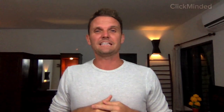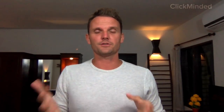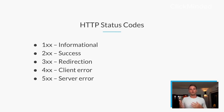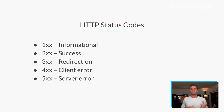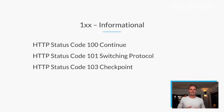Let's jump into each one of these. The 100 block — these are informational requests. The 200 block — those are successful requests. The 300 block is for redirects. The 400 block will be for client errors. And the 500 block will be for server errors. We'll dive into each one of these next.